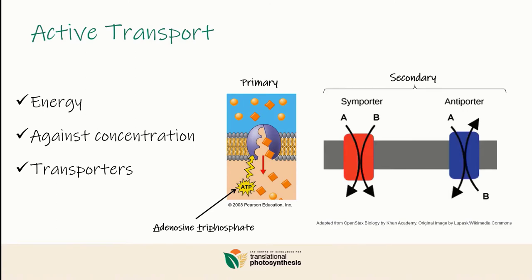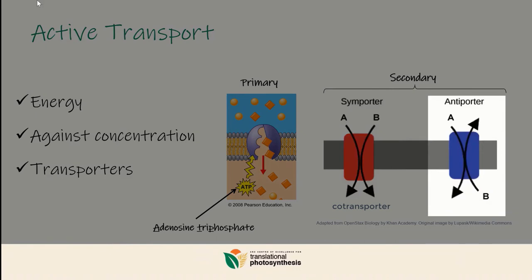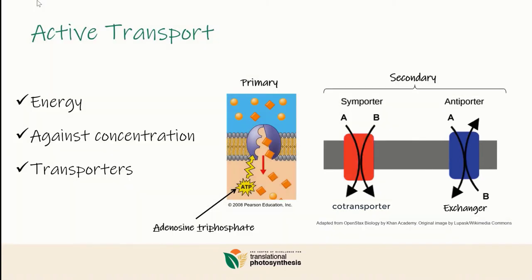In secondary active transport, the movement of the molecule of interest is coupled with another. When the two molecules move in the same direction, the transporter is called a symporter, which is a kind of co-transporter. When the two molecules move in opposite directions, we're talking about an antiporter, which is a kind of exchanger. In both cases, the energy comes indirectly from the natural phenomenon of diffusion.